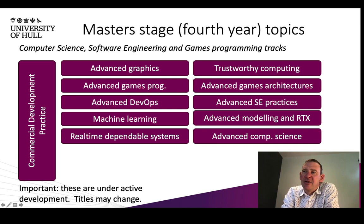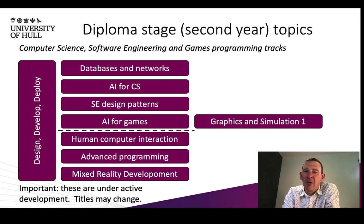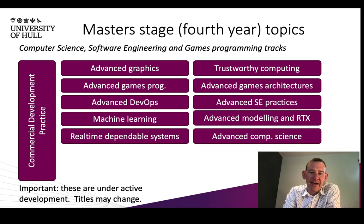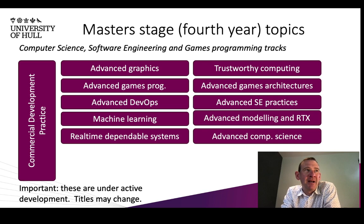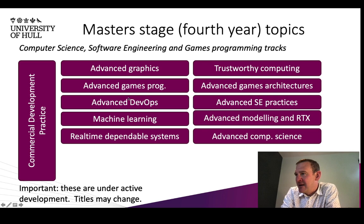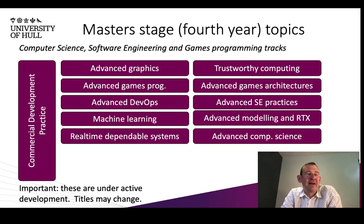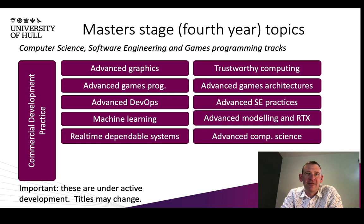If you're staying with us into the master stage — the fourth year — our backbone structure module is called Commercial Development Practice. This is similar to Design, Develop, Deploy in working through the full software lifecycle, but this time with regular contact with external clients, giving you something almost like a placement or internship embedded in the module structure — a real-world client interface module. The advanced modules carry on the vertical pathways from across the degrees in a spiral way — a spiral curriculum design — revisiting competencies throughout the stages, building on them and going deeper in terms of criticality and ability to work in this domain.